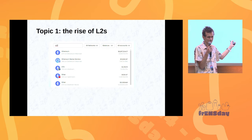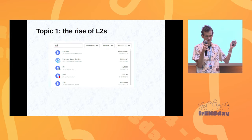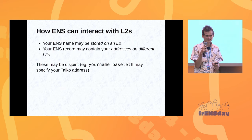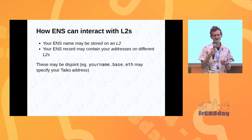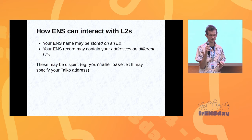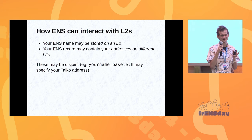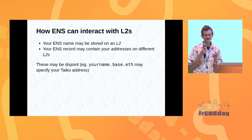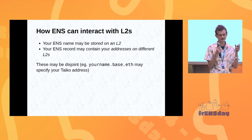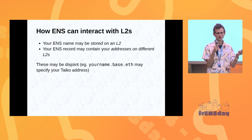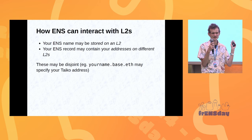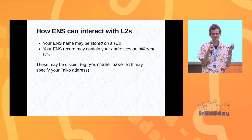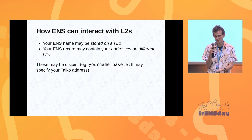So lots of different stuff actually happening on all of these. And one of the questions is basically: how does ENS need to adapt in order to interact with the layer two ecosystem? I think there are exactly two topics that are crucial. One is that your ENS name might be stored on an L2, and the other is that your ENS name might contain your addresses on different layer twos.